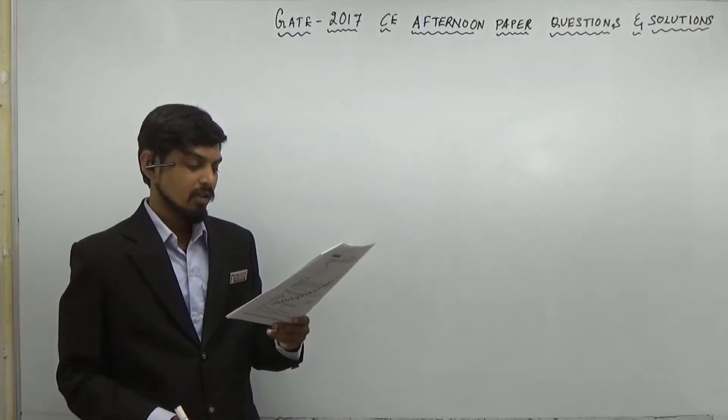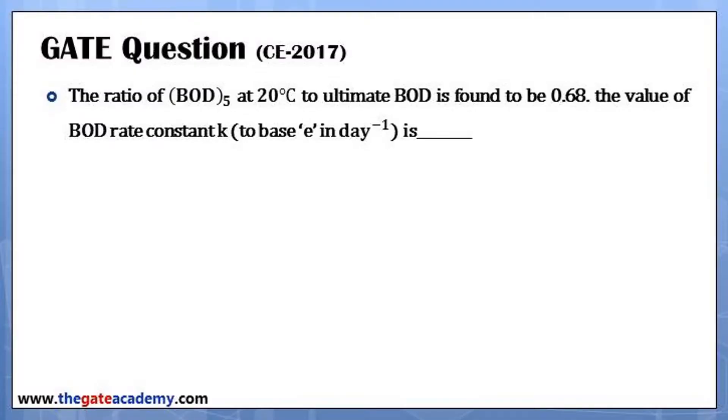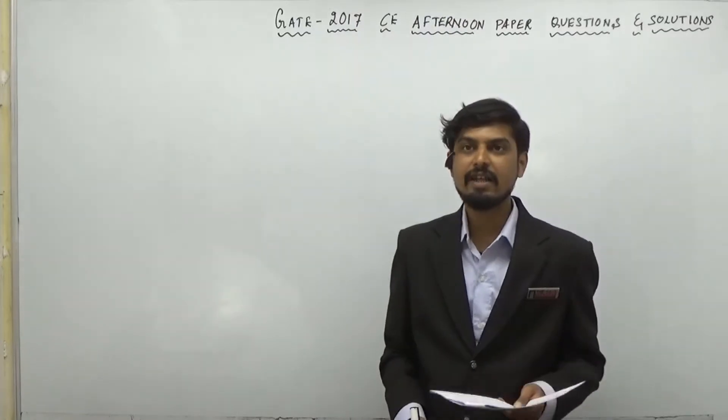The first question was, the ratio of BOD5 at 20 degree centigrade to ultimate BOD is found to be 0.68. The value of BOD rate constant K to the base E per day, in per day, is blank.